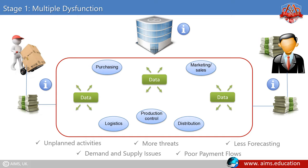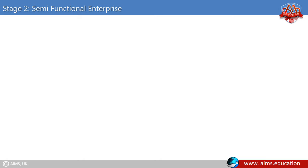Stage 2: Semi-functional enterprise. At this stage, the nucleus organization begins to improve effectiveness, efficiency and quality within functional areas. As explained in the below exhibit, information flow has been improved and functional areas have been defined. However, departments perform their functions one after the other. There is no collaboration between various departments and no partnership formed with customers and suppliers.